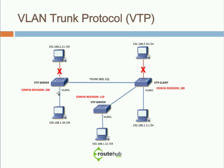That is why it is recommended to configure switches as VTP transparent mode. If a rogue switch is plugged in, those changes would not affect your production environment. Be careful using VTP servers and clients, and use VTP transparent mode whenever possible — even with many switches — because you can use automation scripts to enable VLANs across your environment.